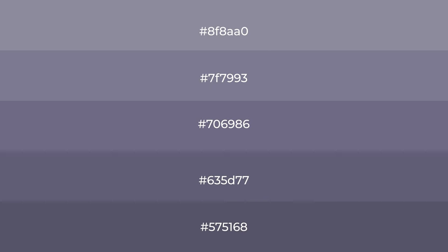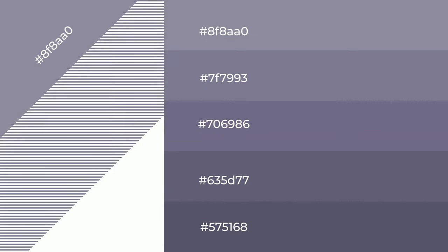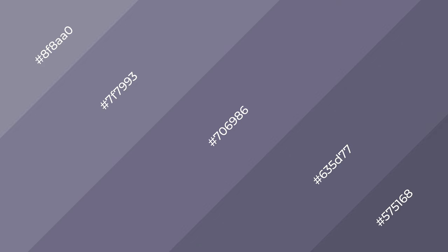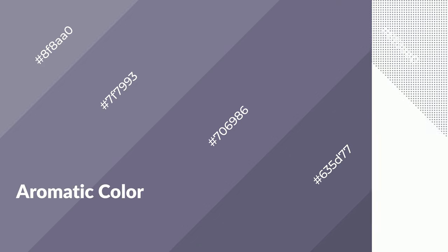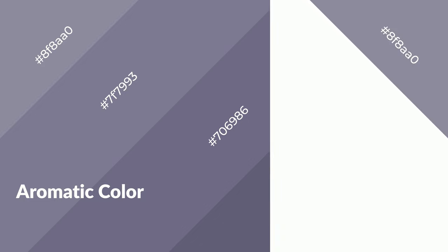To generate shades of a color, we add black to the color. It is used in patterns, 3D effects, and layers. Shades create depth and drama. Aromatic is a cool color and it emits calming, serene, soothing, refreshing, spacious, and relaxed emotions.